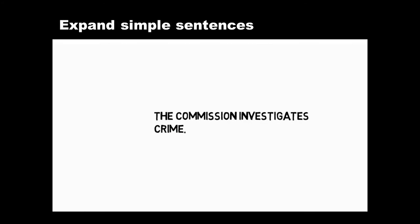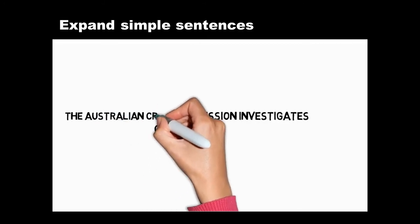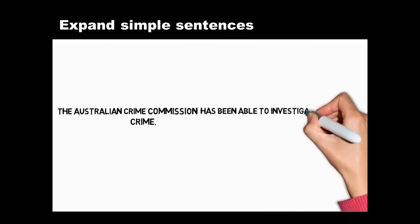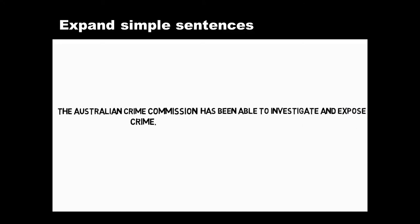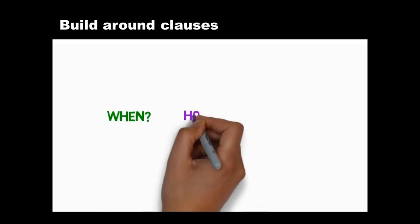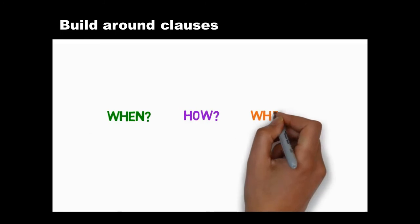You can expand simple sentences by adding more words to the subject, verb, or object — making the subject more precise, changing the verb form if you need to, or qualifying your object, narrowing its scope like this. These techniques help you flesh out your ideas and make your writing more interesting to read.